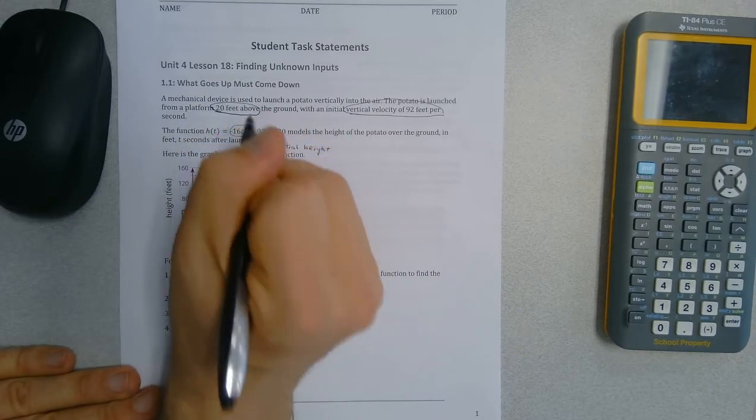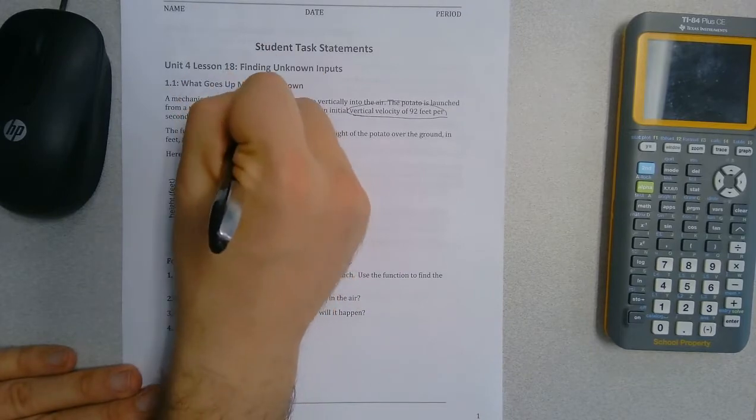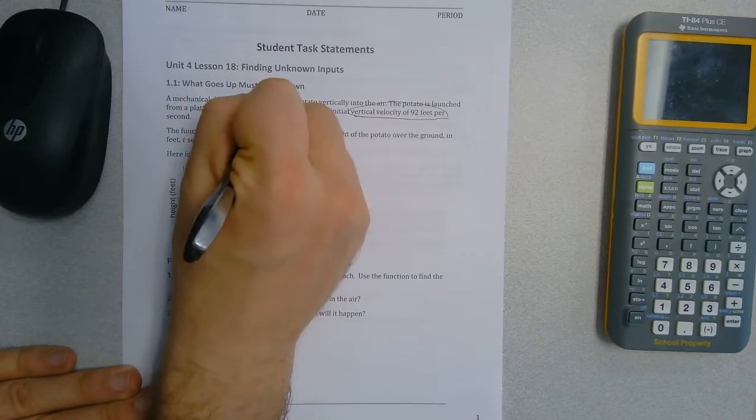And then this right here, this negative 16t squared, the minus sign tells us it's bringing it down, and that's our effects from gravity.